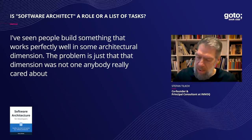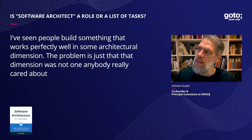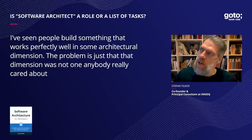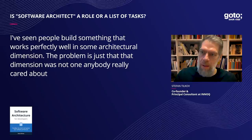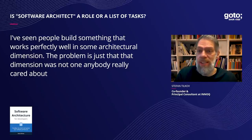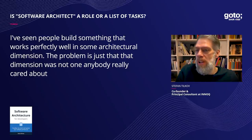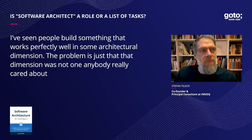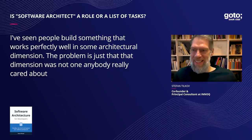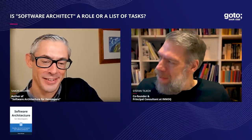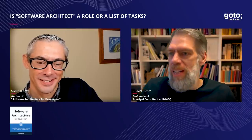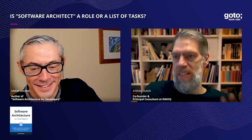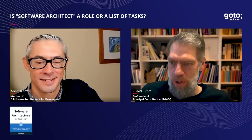I've also seen people build something that works perfectly well in some architectural dimension, but the problem was just that that dimension was not one anybody really cared about — nobody wanted that system to be super scalable. The quality attributes are something you need to take into account to make a decision about what actually matches the requirements, and you have to know them upfront, and people often don't completely agree on them.